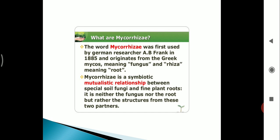A mycorrhiza is a symbiotic association between a green plant and a fungus. The plant makes organic molecules such as sugar by photosynthesis and supplies them to the fungus, and the fungus supplies to the plant water and mineral nutrients such as phosphorus taken from the soil.